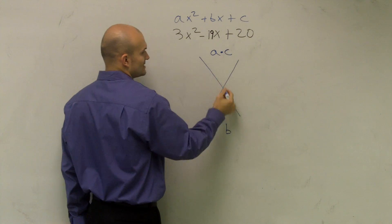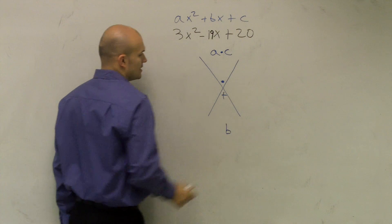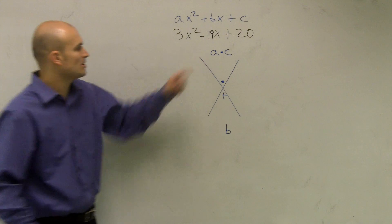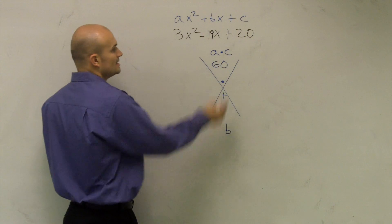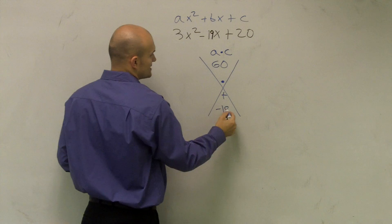So what I'm going to do is I'm going to multiply A times C, and then I'm going to add for B. So I'm going to multiply A times C, which will give me positive 60, and then I'm going to write B, which is negative 19.